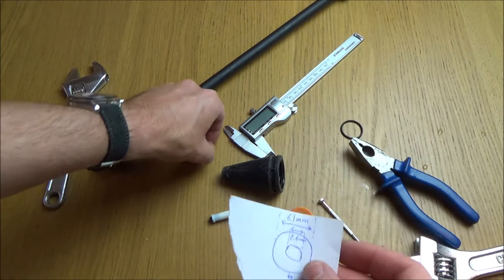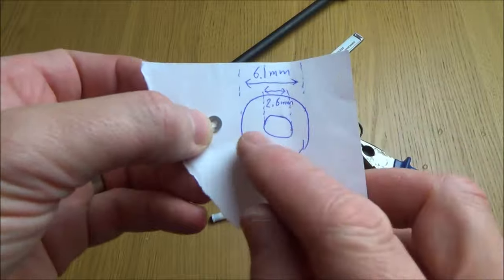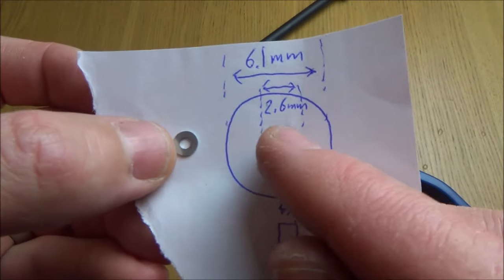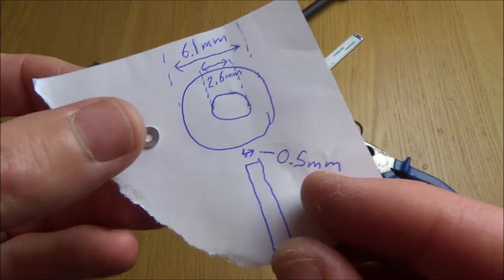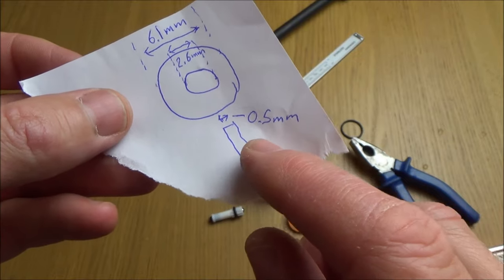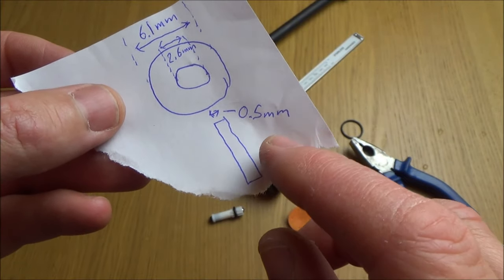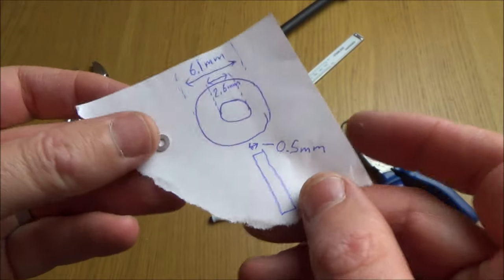The little washer that I've used in this one is 6.1 millimetres across here, internal diameter of 2.6 millimetres and a depth of 0.5 millimetres. Now you might find if you've got more wear that you might need it slightly deeper for example 0.6 or 0.7 millimetres. Again if you have less wear you might need it 0.4 millimetres.